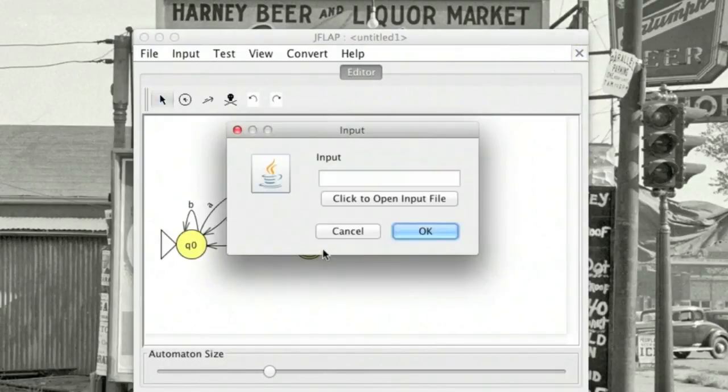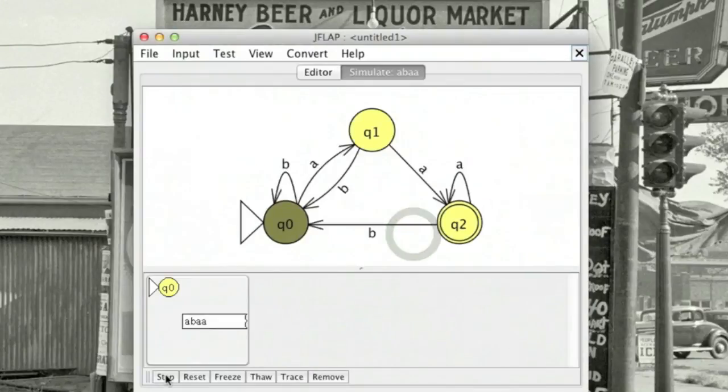If I run it for a string that's in the language, it starts out the same. I get reset back to the initial state, but then I read my suffix and the string is accepted.